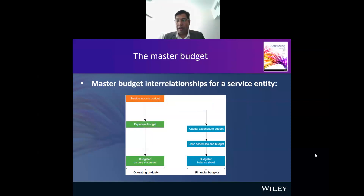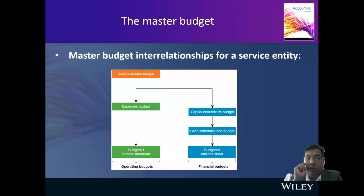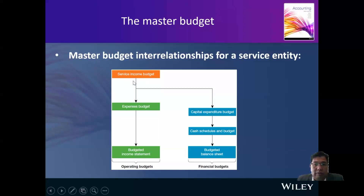Hello, welcome back. We are going to continue with our discussion about budget. The master budget basically shows the interrelationship — for a service industry, you can see here this is our service industry. For example, for cleaning companies, they provide services, so you need to prepare the budget for your income first.